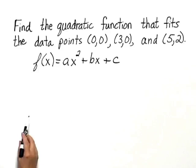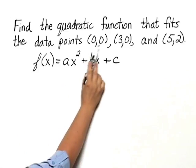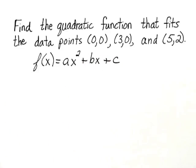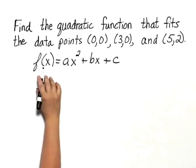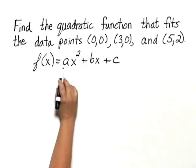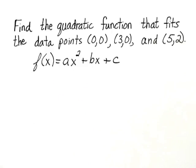We're given three pieces of information. We're given that these three points are part of this, would make this function true. So we can actually fill in for f of x and x and leave a, b, and c like they are.